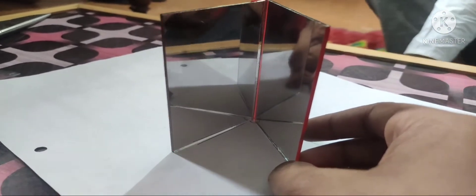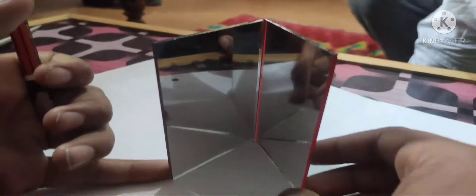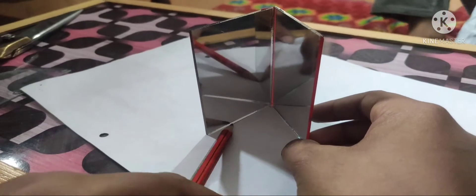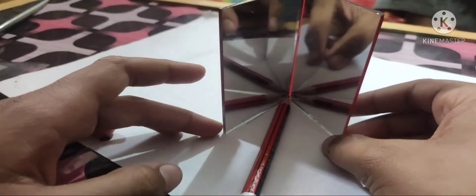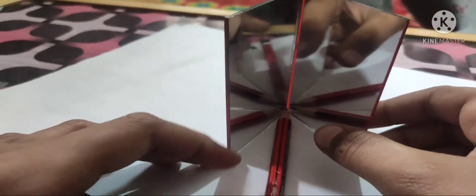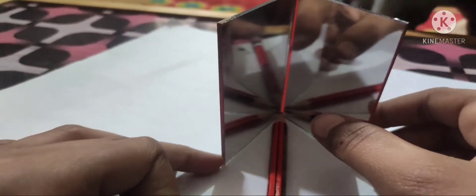After touching your pencil between the mirror, you can see there were 5 image formations. And at different angles, there were different numbers of image formations.